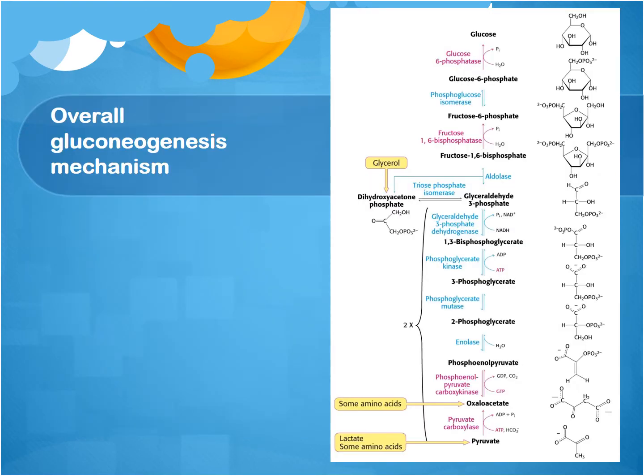This is what the overall gluconeogenesis mechanism looks like. It almost looks like the backward version of glycolysis, but the ones in pink are the different enzymes that are used specifically in gluconeogenesis.